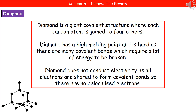The first allotrope of carbon we're going to look at is diamond. Its structure is in the bottom left there, and you can see that in that diagram it looks kind of like a triangle, and that's the easiest way to remember it. Diamond is a giant covalent structure where every carbon atom is joined onto 4 others. Considering some of the properties of diamond, it's got a high melting point and is hard.